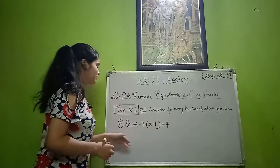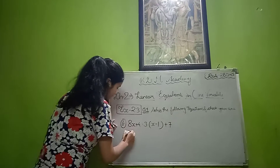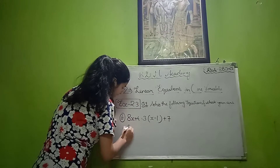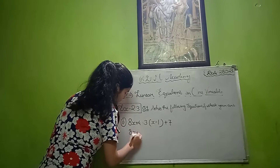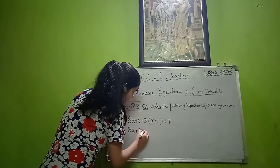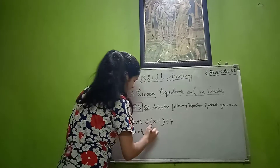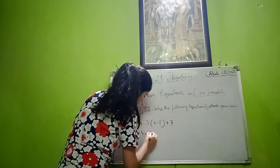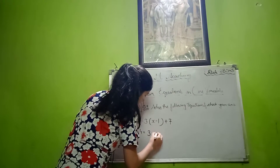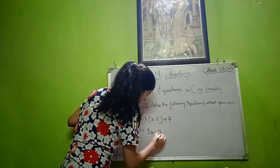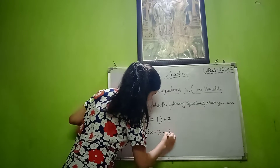First of all, we have to solve this. So, 8x plus 4 equals to 3 into x, which is 3x minus 3, and plus 7.